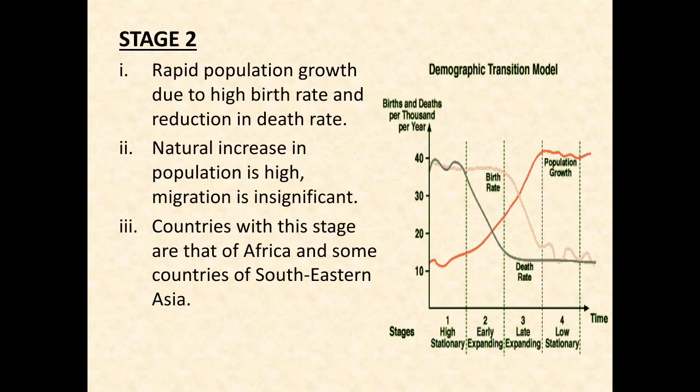Next we have Stage 2. Stage 2 has rapid population growth due to high birth rate and reduction in death rate. As there are developed medical facilities, the death rate will decline, and birth rate is obviously high. There is natural increase in population and migration is insignificant, because the population increases so much that migration does not affect the population of the country in that given period of time. Population here is expanding.